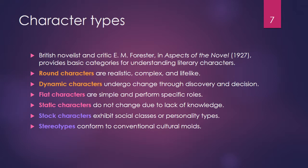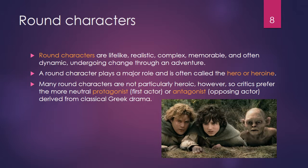The following six character categories are part of nearly every glossary of literature — please write down these six character types. British novelist and critic E.M. Forster, in Aspects of the Novel, provides basic categories for understanding literary characters. First, round characters are realistic, complex, and lifelike. Dynamic characters are usually round characters but undergo change through discovery and decision. Flat characters are simple and perform specific roles. Static characters are usually flat characters that do not change due to lack of knowledge and self-recognition. Stock characters exhibit social classes or personality types. And stereotypes conform to conventional cultural molds, so much so they are not individuals at all.